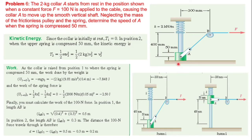The displacement is 400 mm. When we move the collar upward, the work done against gravity is negative. The spring is compressed 50 mm, so the work of the spring is also negative.